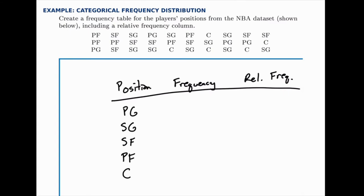For point guards, we count one, two, three, four — so the frequency is four. For shooting guards, you can count one, two, three, four, five, six, seven, eight, nine.